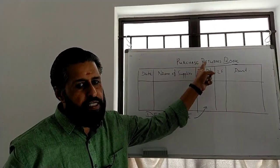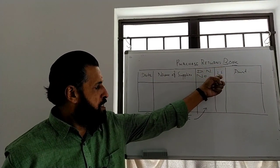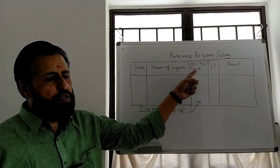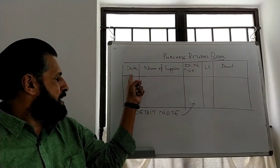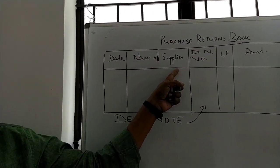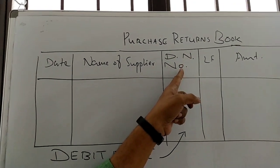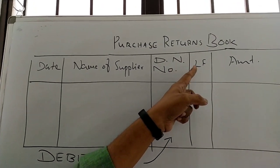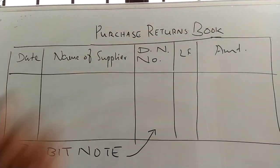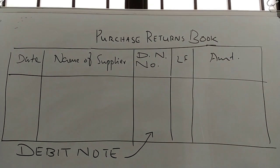Purchase Returns Book. This is the format: Date, Name of Supplier, Debit Note Number, Ledger Folio, Amount. This is the format.